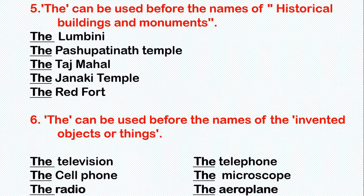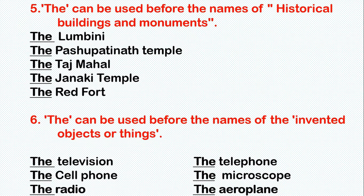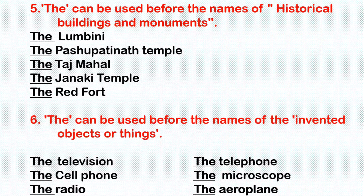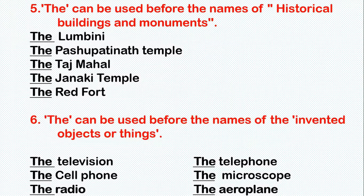Rule 6: 'The' can be used before the names of invented objects or things. For example: the television, the cell phone, the radio, the telephone, the microscope, the airplane, etc.